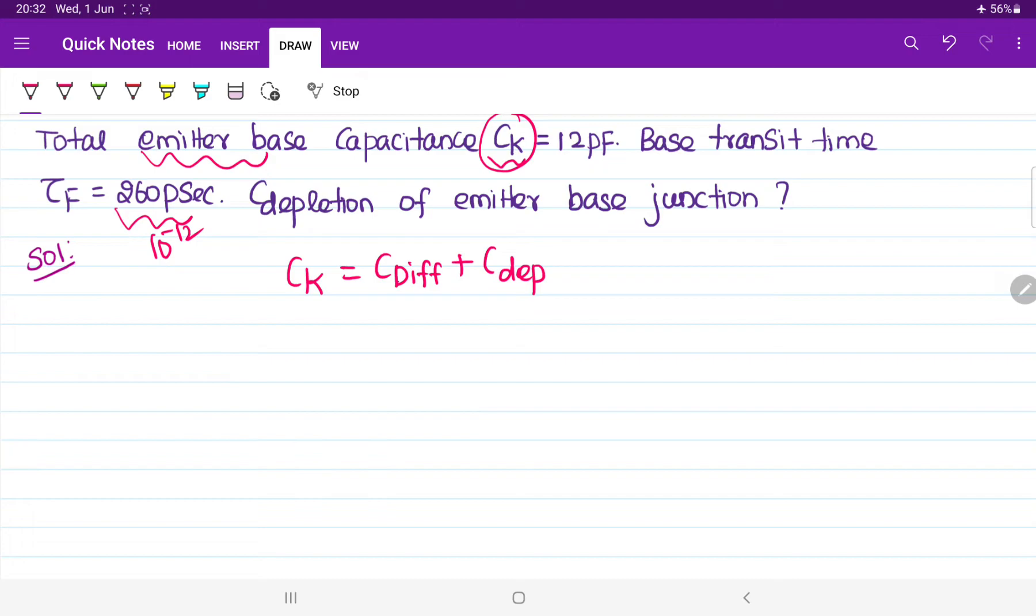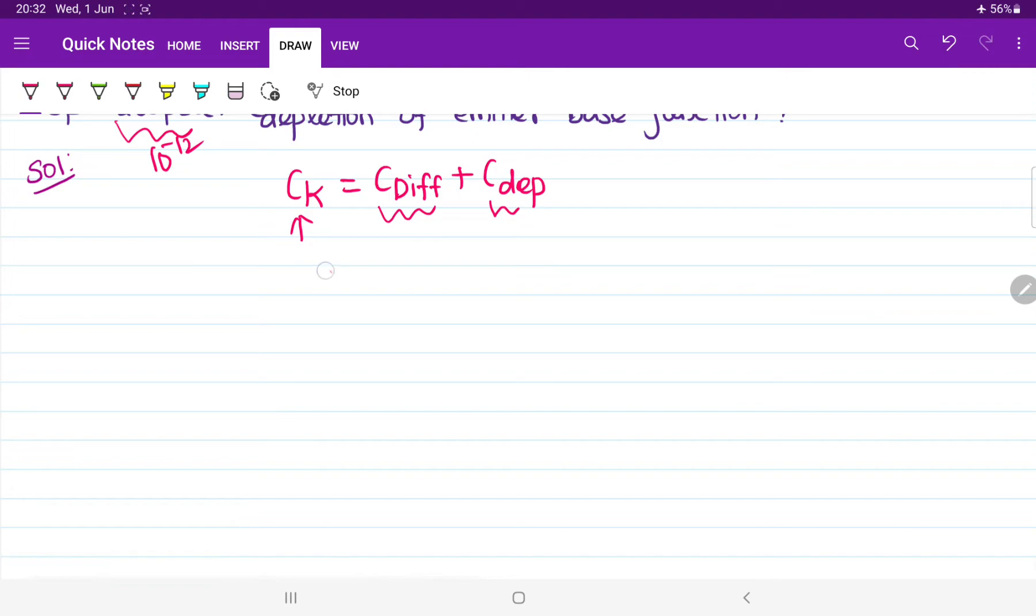First of all, between the emitter to base junction, of course, we are observing a capacitor that is not a single capacitor. We will be observing two capacitors. One capacitor is called diffusion capacitor and another one is called depletion capacitor. This is the overall capacitance that we are observing across the base emitter junction. They told that overall capacitance value is 12 picofarad. In place of CK, I can substitute 12 picofarad.